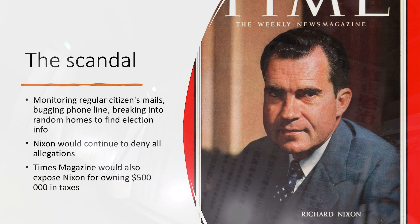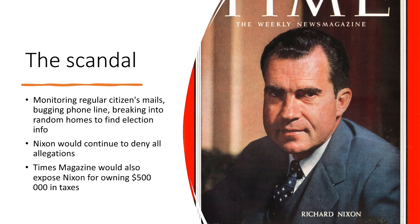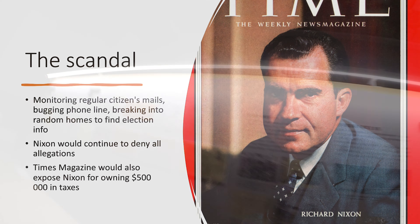This is just a few details from the Watergate scandal, and it went so much deeper than the points mentioned. I highly recommend that you look deeper into the case. It is unbelievable the level of corruption that was taking place in the early 70s. Some of the things that he did included monitoring regular citizens' mails, bugging phone lines, breaking into random people's homes in order to collect election data. And Nixon would continue to deny all allegations. It didn't help that during this time, Time Magazine also exposed that President Richard Nixon owed $500,000 in taxes.